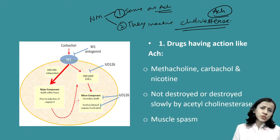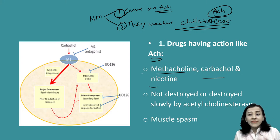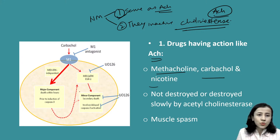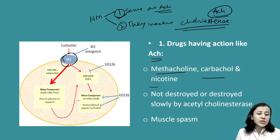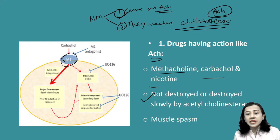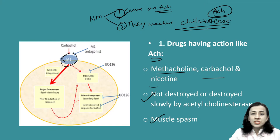The first group of neuromuscular stimulants — drugs having action like acetylcholine — are methacholine, carbachol, and nicotine. They bind with the receptors of acetylcholine and have similar action. They are not destroyed, or are destroyed slowly, by acetylcholinesterase. So these drugs cause repeated stimulation and continuous action on the muscle. Sometimes the side effect is they may produce muscle spasm.